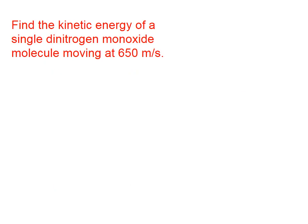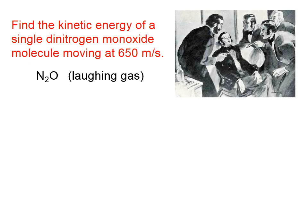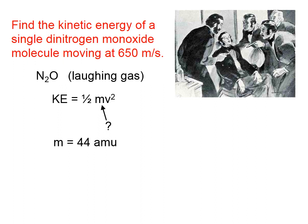Let's find the kinetic energy of a single dinitrogen monoxide molecule moving at 650 meters per second. Dinitrogen monoxide has the formula N₂O — in case you're wondering, it's laughing gas, which was used back in the day to make people do silly things. To find the kinetic energy, we're going to use the kinetic energy equation. We have the speed, 650 meters per second, which is in the right unit. But we need the mass in kilograms, which we don't know yet.